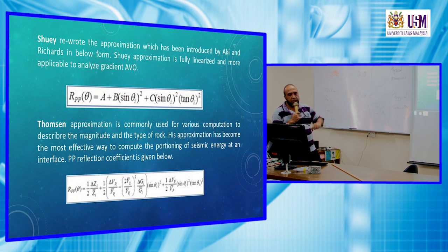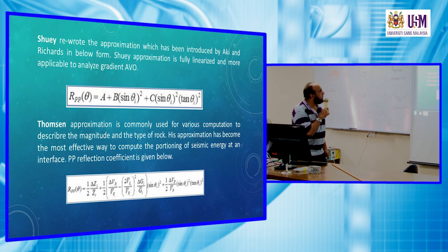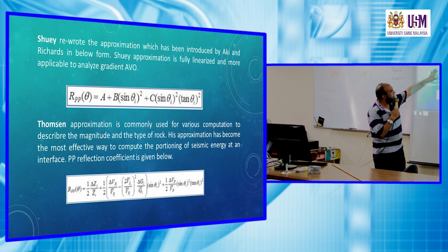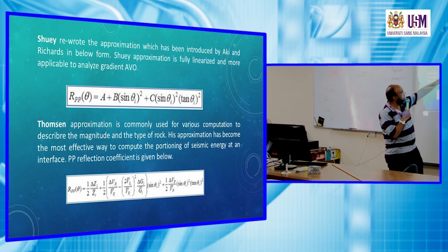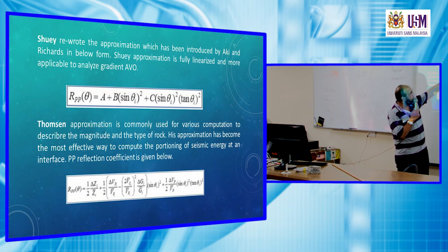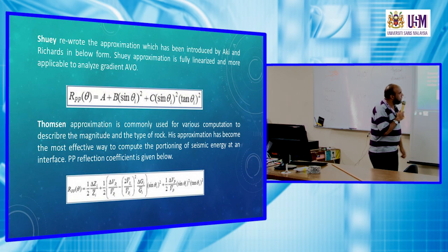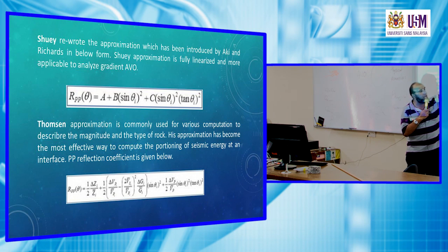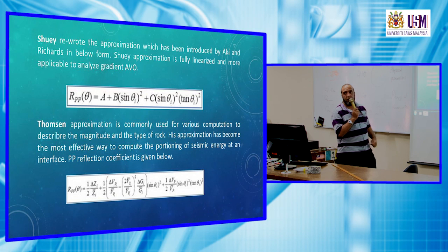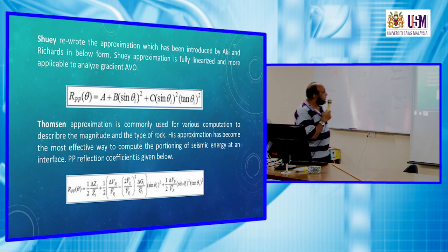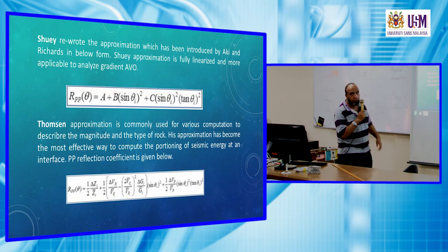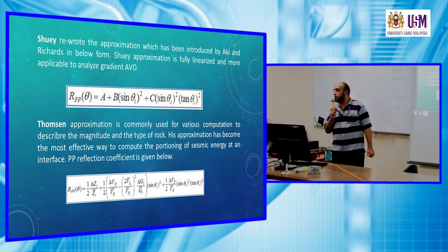The first attempt to simplify is linearization made by Shuey. He rewrote the approximation which has been introduced by Aki and Richards in this form. So, where RPP of theta equals A, this is a constant to be determined, plus B, sine theta squared, plus C, sine theta squared, tan theta squared. But sometimes, because this term is very small, sometimes in literature the last term is neglected and we have only the linear part of the model.